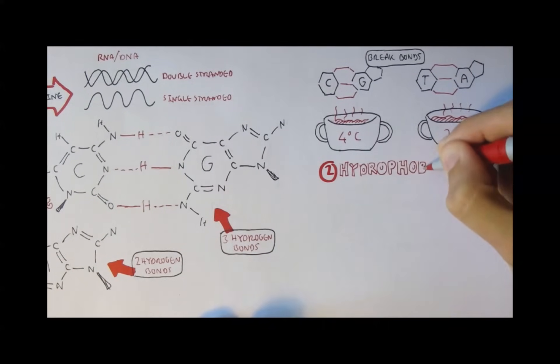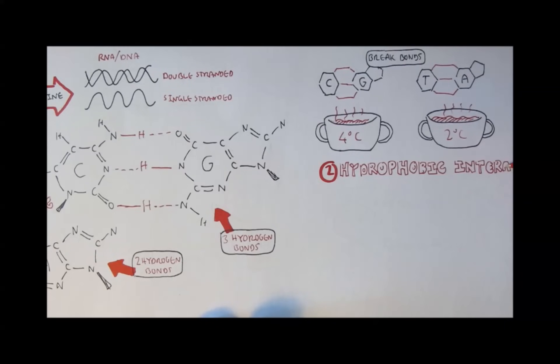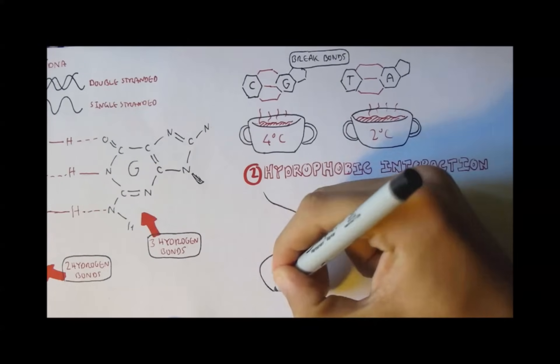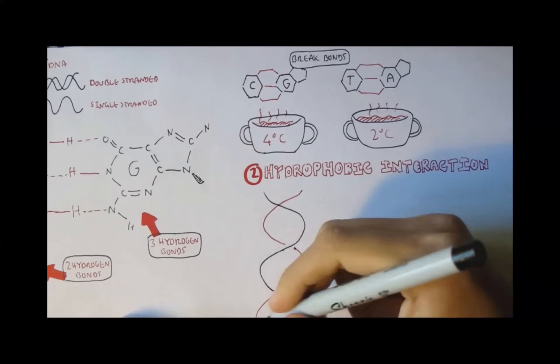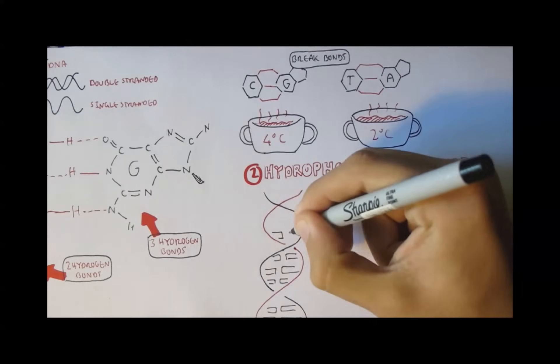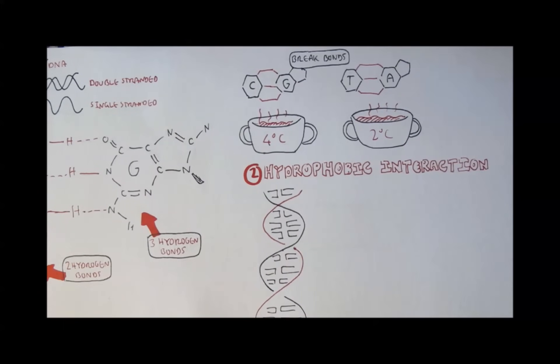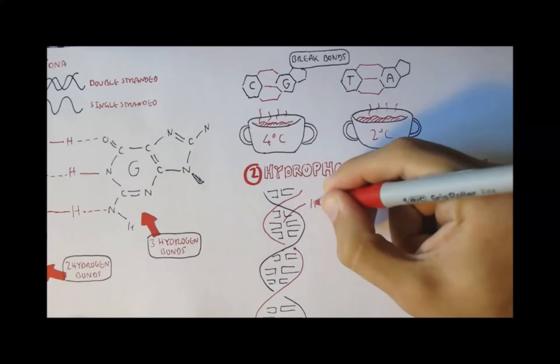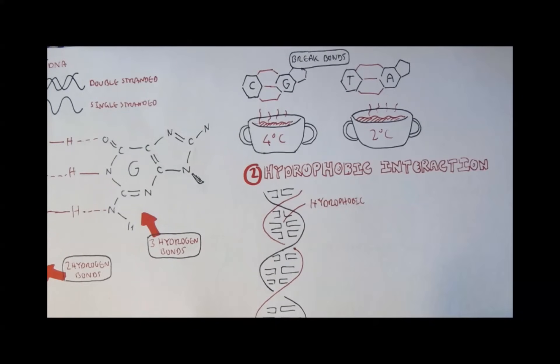The next positive force, positive force number two, is hydrophobic interactions, which is basically interactions with water. So here we have a normal DNA with its sugar backbone, and in the middle are the bases. In the middle of DNA, the bases are hydrophobic - they are scared of water. Whereas the phosphates of the sugar backbone like to interact with water, they are hydrophilic.